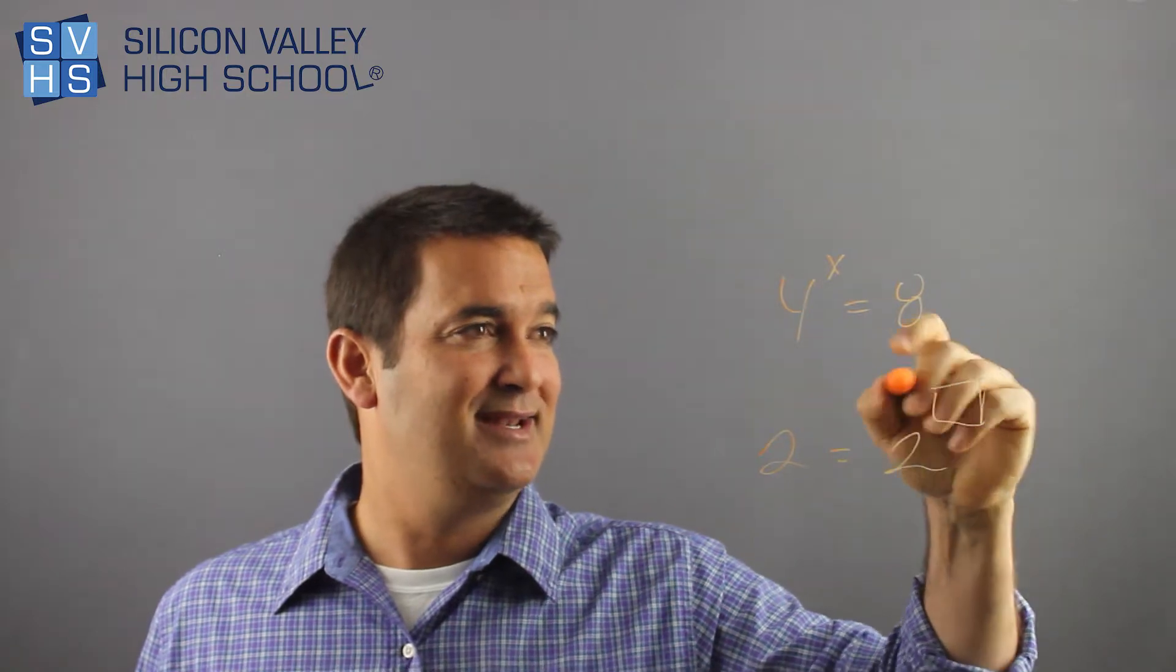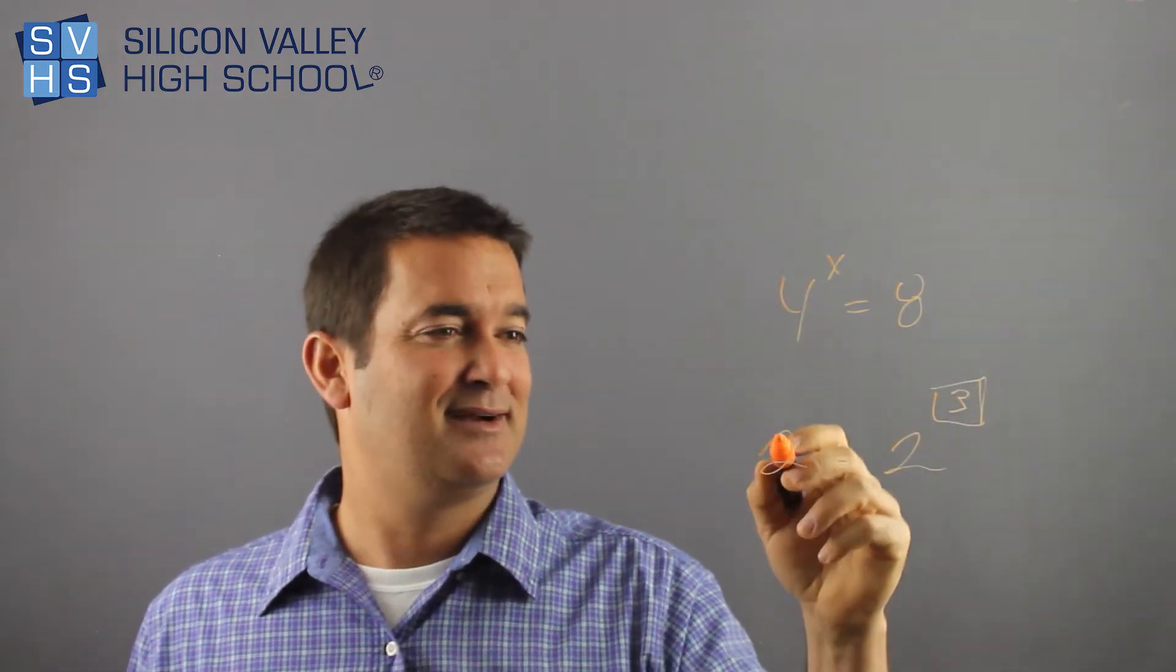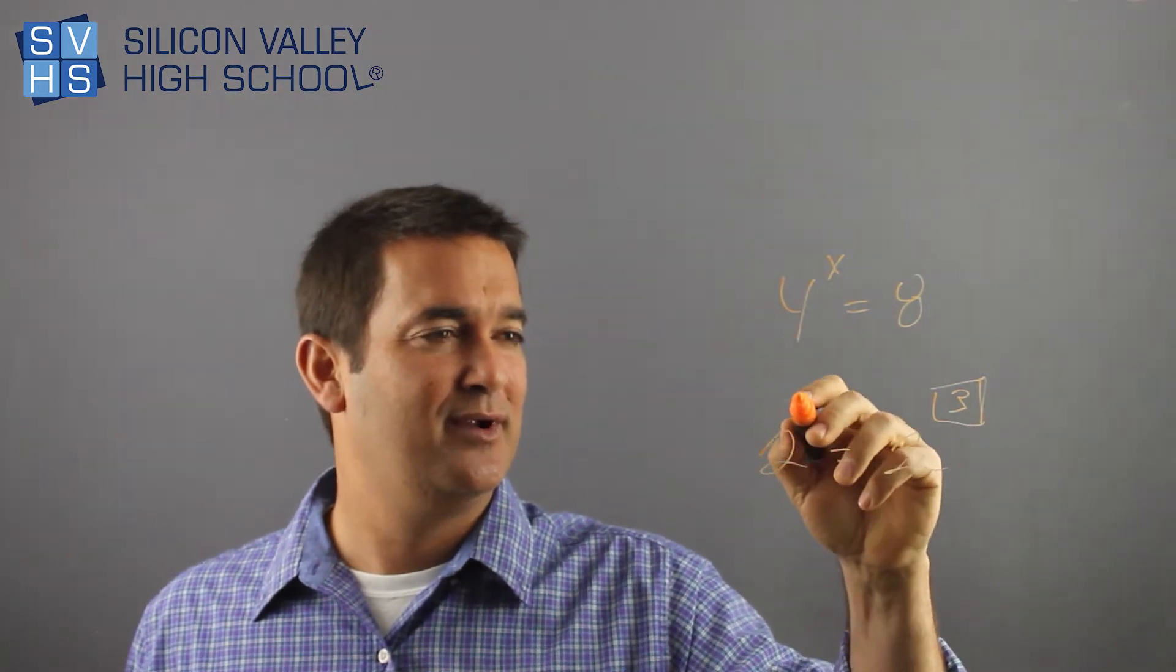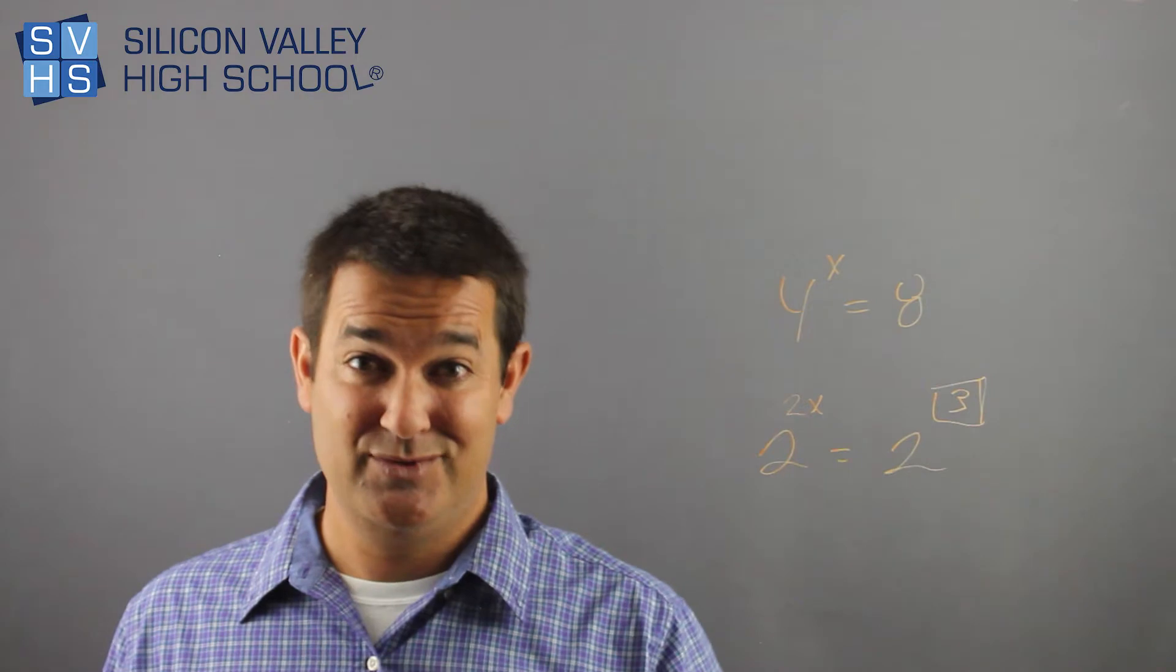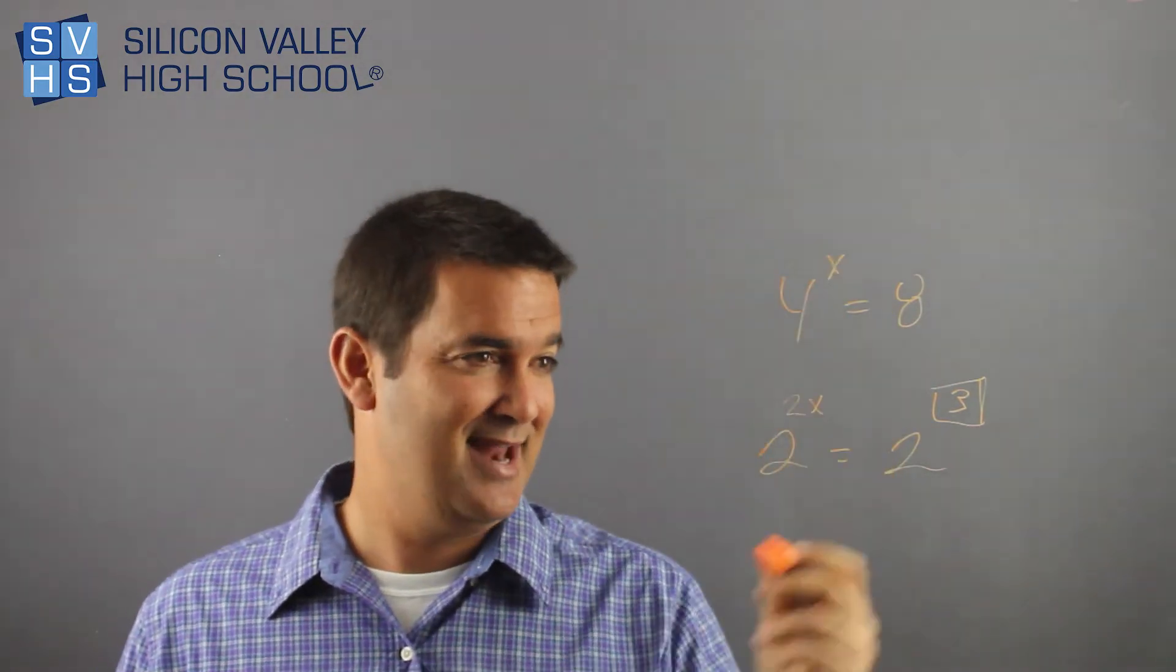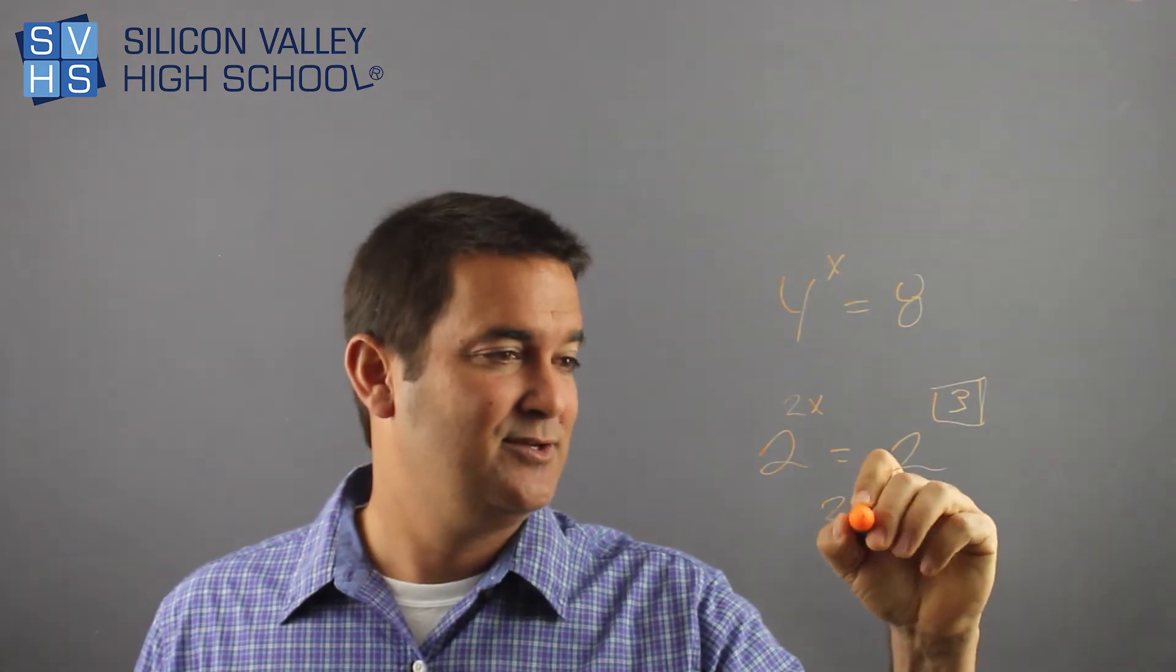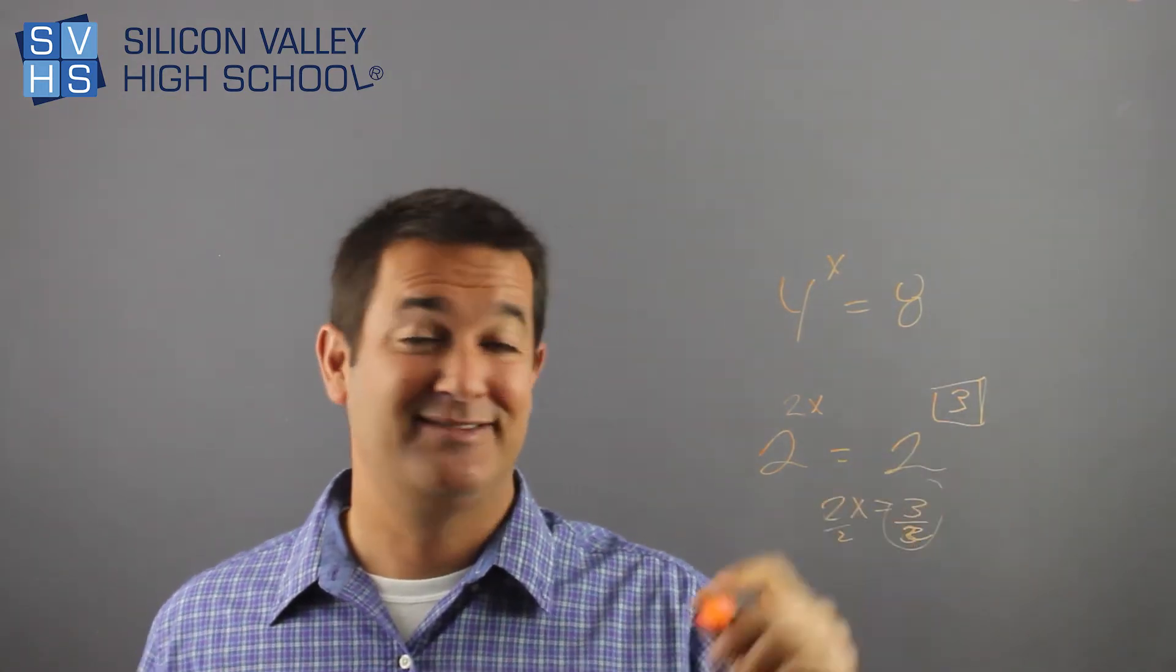2 to the what is 8? 2^3 = 8. 2×2 = 4, 2×2 = 8. What about this sucker? 2^2 = 4. There was already an x up there, so he stays up there being multiplied by the new guy. So 2^(2x) is the same as 4^x. Now the bases are the same. 2x = 3, divide by 2, x = 3/2.